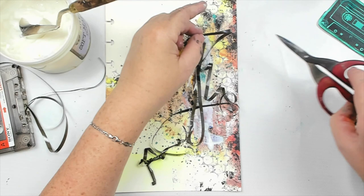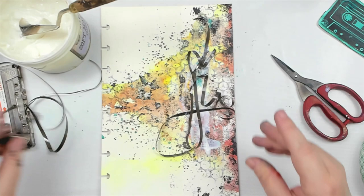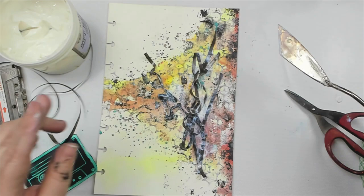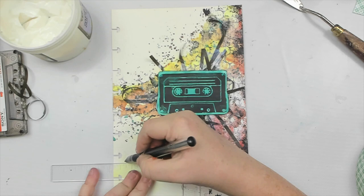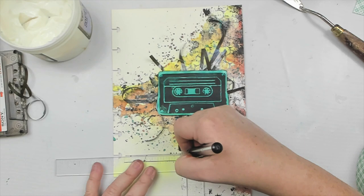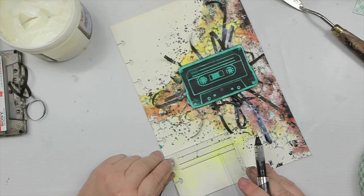I use matte medium gel to glue the film to the background. To add a little bit of journaling, I decided to make some lines to make it seem like the lines on a cassette tape. I could have written right on the cassette tape, but I felt it was too busy, so I decided to add some lines with a ruler and then just journal on top of those lines.